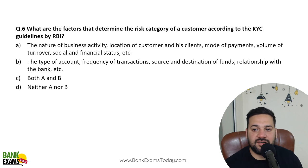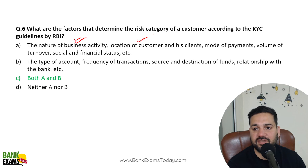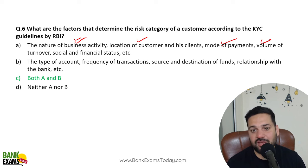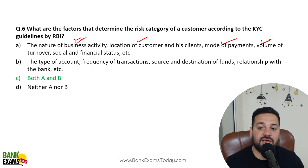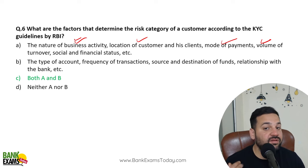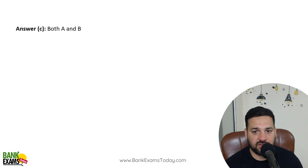What are the factors that determine the risk category of a customer? These include: nature of business activity, location of the customer and their clients, modes of payment, volume of transactions and turnover, social and financial status, type of account, frequency of transactions, source and destination of funds (especially if outside India), and the customer's relationship with the bank. All these factors are used for risk categorization.